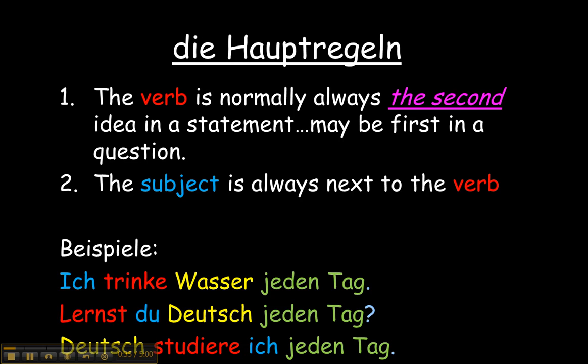For example: "Ich trinke Wasser jeden Tag." Ich is the subject, trinke is the verb. This is a statement, and you can see that the verb trinken is the second item in the sentence. If you are forming a question without a question word in German, then you start with the verb — "Lernst du Deutsch jeden Tag?" — but notice the subject du is still next to the verb. And thirdly, "Deutsch studiere ich jeden Tag" — if we want to emphasize something else, we place it at the beginning, but then our verb must come second, and our subject will immediately follow.